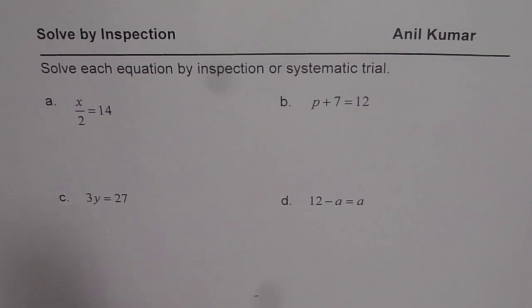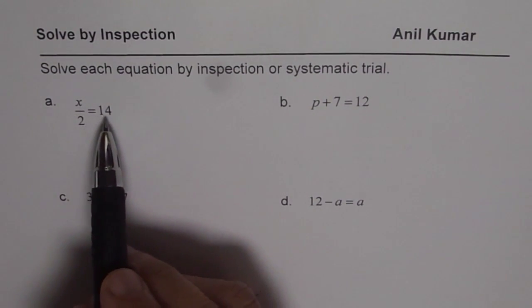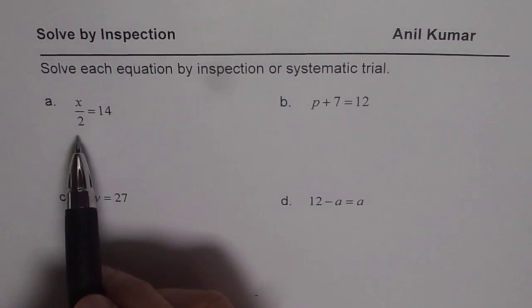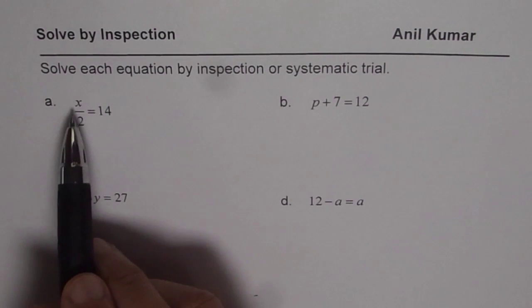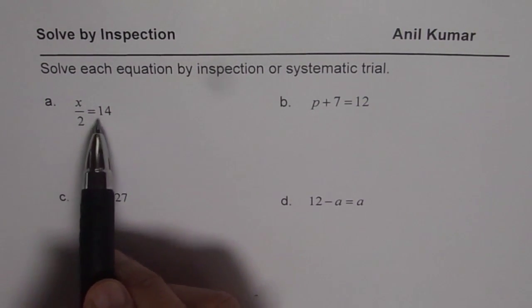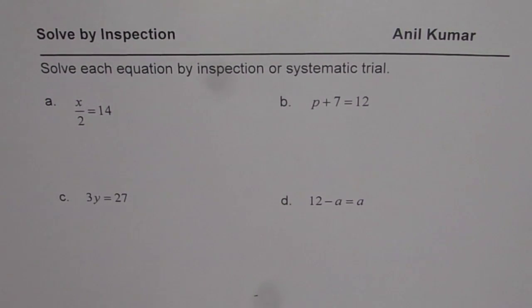The first one is x over 2 equals 14. If I read this as half of a number, see what is x over 2? Half of a number. Half of a number is 14, so what should be the number? Well, the number should be 28.